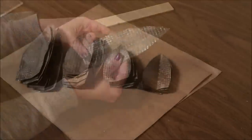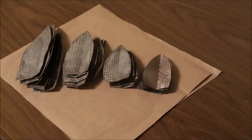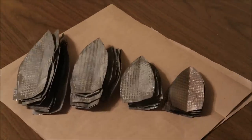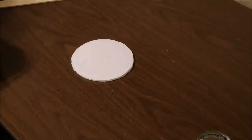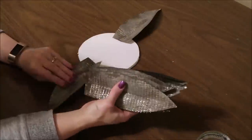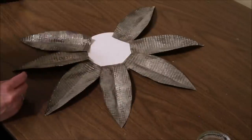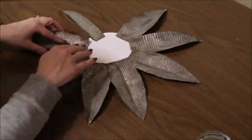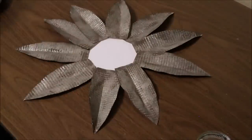So here I have all of my petals prepped. They are all painted and creased and ready to assemble. For the back of this flower I cut out another six and a half inch diameter circle out of foam core board, and that's what I'm going to use to glue the petals on for this flower.